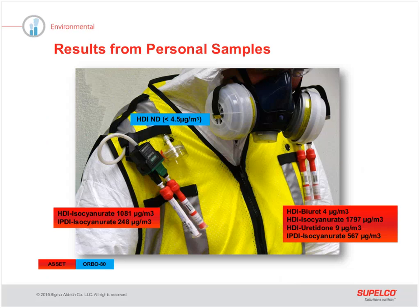Here are the results of the personal sampling. Isocyanate oligomers and their concentrations were collected on the acid samplers. The HDI and IPDI monomer concentrations were below detection limits. The concentrations found were higher, and two additional isocyanates were detected on the spray painter's left side. This difference may have been caused by the booth airflow movement, which was from the painter's right to left. No isocyanates were detected in the Orbo 80 sampler, and we didn't run an Orbo 80 on the painter's left side to see if we could also pick up HDI there.